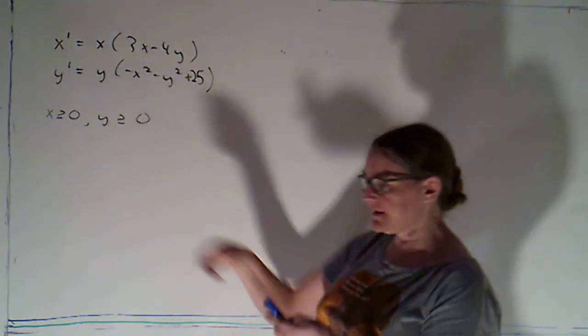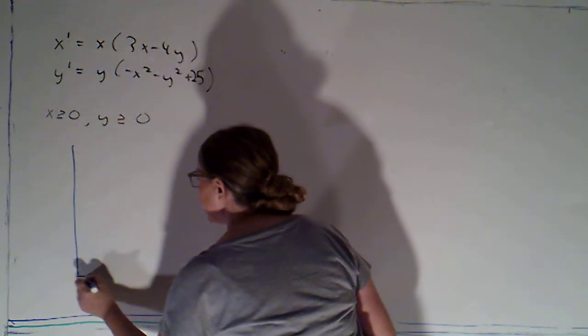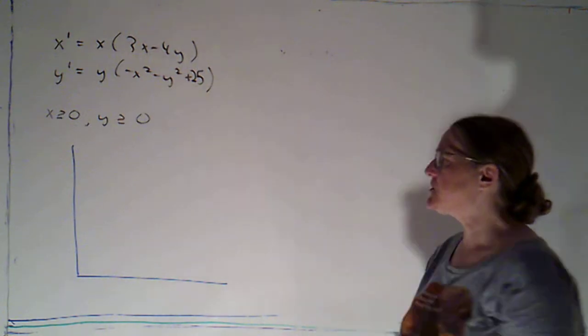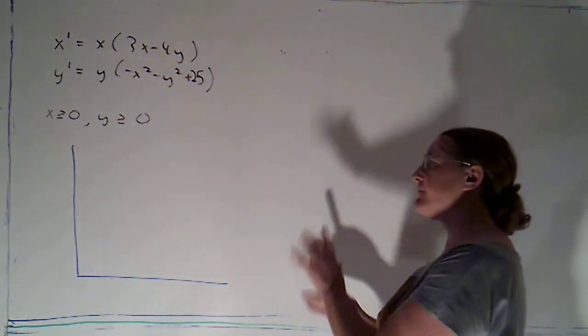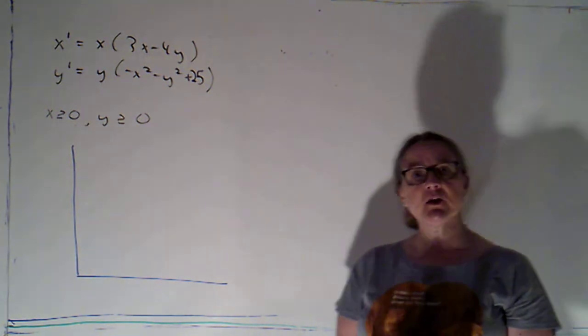Y prime is y times negative x squared minus y squared plus 25. And I've stated that for this system, x and y are representing quantities that are non-negative, so that we're just concerned with drawing the phase portrait in the first octant as we were in the last situation.